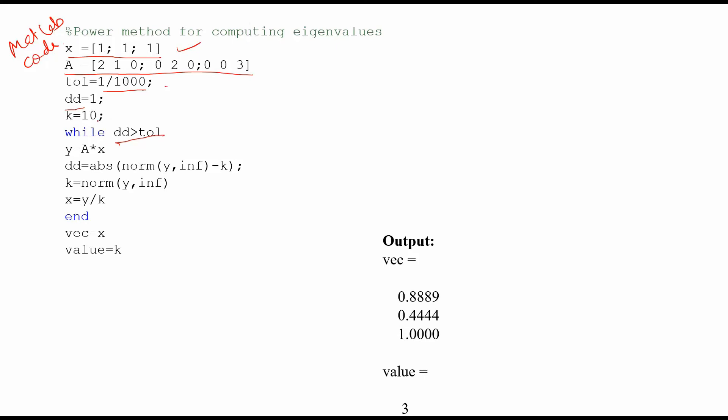Your tolerance is this and your dd, the error, is this and k is 10. Now you are calculating y equals A into x. Now what you are doing is looking at the error. This norm infinity of y is doing nothing but calculating the maximum component in y. Since y is a vector, it will find the maximum component of y.